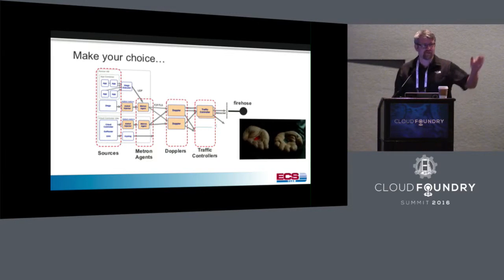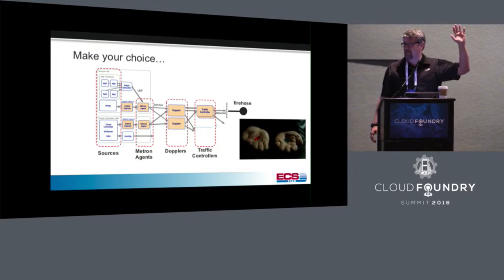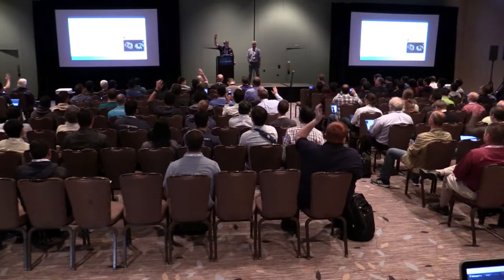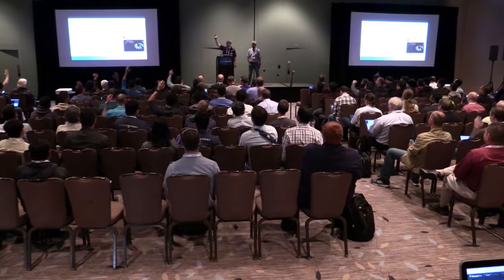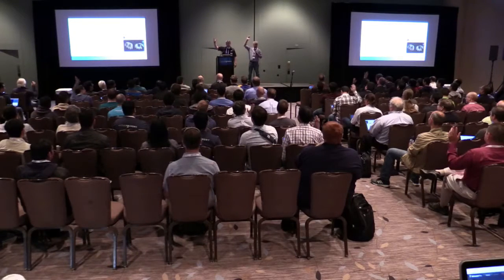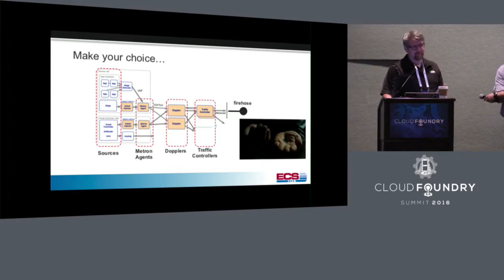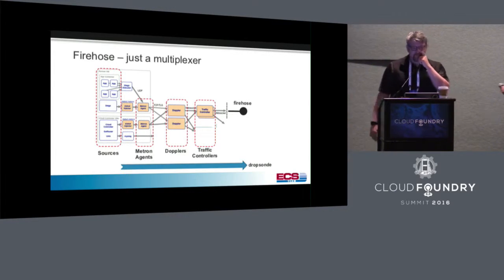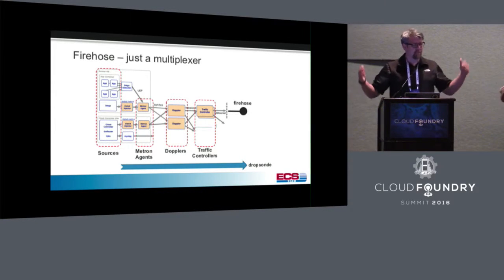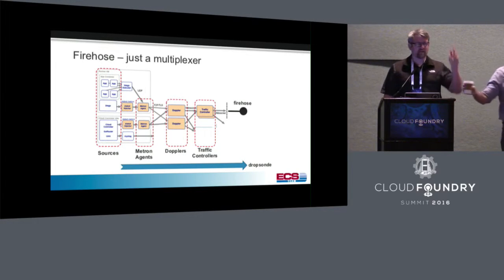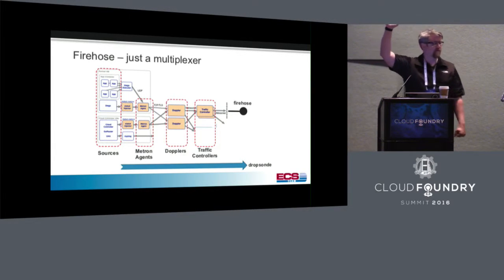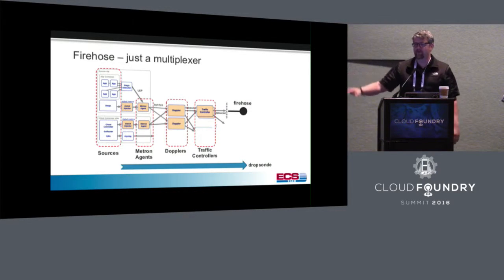The Firehose is just a big, giant multiplexer — you've got a bunch of inputs going in. At those sources, data gets turned into what's called the Dropsonde protocol. Who here has heard of protocol buffers from Google? All the Dropsonde protocol is, is built on top of protocol buffers — a binary wire format. It's very efficient, very compressed, and messages are flowing through in Dropsonde.